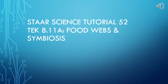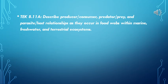Star Science Tutorial 52, TEEK 811a: Food Webs and Symbiosis. TEEK 811a: Describe producer, consumer, predator-prey, and parasite-host relationships as they occur in food webs within marine, freshwater, and terrestrial ecosystems.